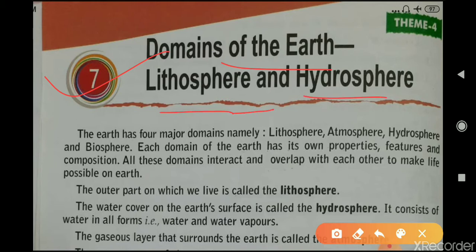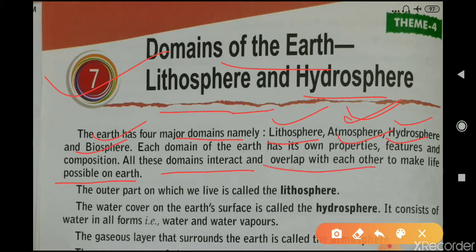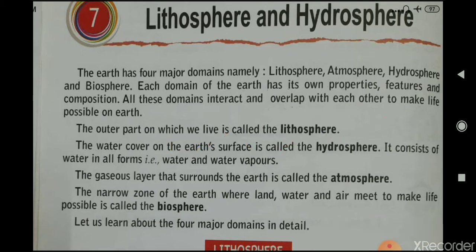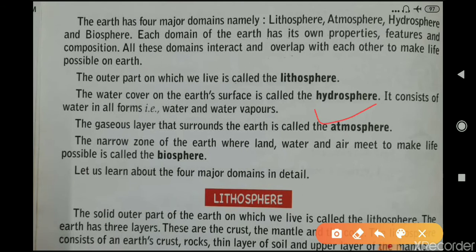The Earth has four major domains: lithosphere, atmosphere, hydrosphere, and biosphere. Each domain has its own properties, features, and composition. All these domains interact and overlap with each other to make life possible on Earth. The outer part on which we live is the lithosphere, the water cover is the hydrosphere, the gaseous layer surrounding Earth is the atmosphere, and the narrow zone where land, water, and air meet to make life possible is the biosphere.